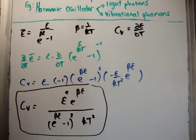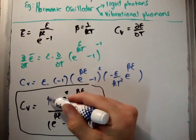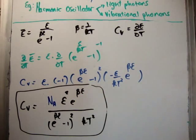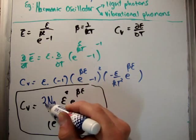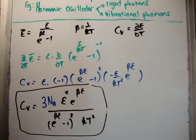In order to get the heat capacity for a mole of oscillators, obviously we need to add Avogadro's number. Now the thing about it is Einstein also said that each oscillator can move in three different directions. So what he did is he multiplied by three for that reason.